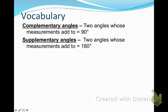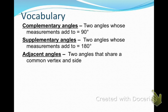Supplementary angles are two angles whose measurements add up to 180 degrees. And then we have adjacent angles — two angles that share a common vertex and a common side.